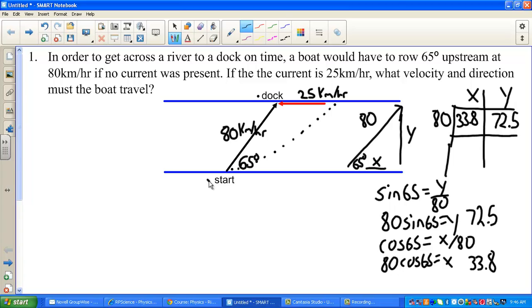Now you have to think about this a little bit. We have the 25 kilometers per hour component. This right here has no Y component. So that is zero. So my total for that column is 72.5.